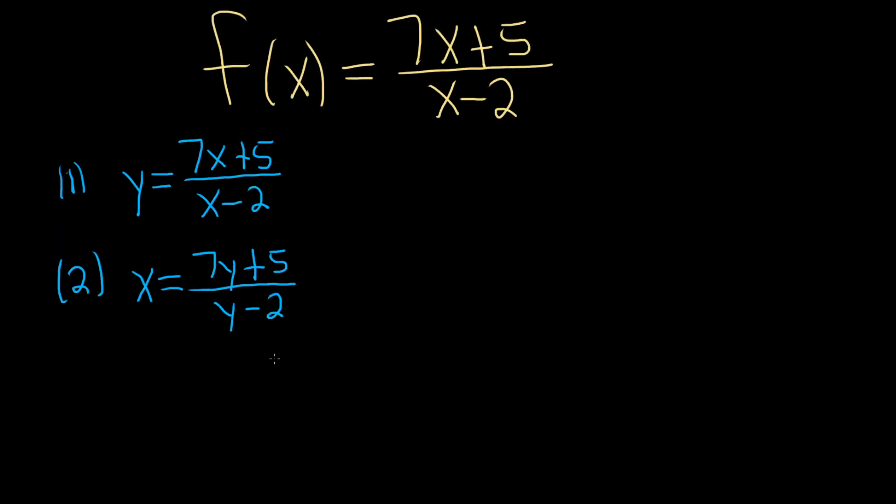And the third step is where it gets a little bit harder. We actually have to solve for y. So I'm going to go ahead and write it again. We have x equals 7y plus 5. It's all being divided by y minus 2.